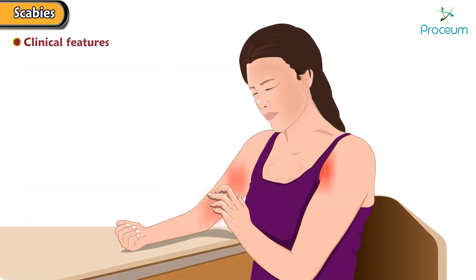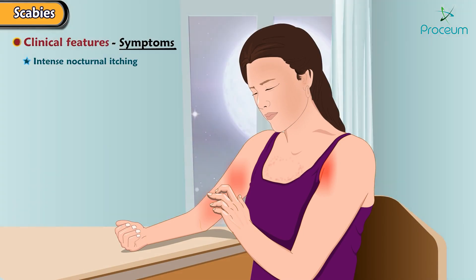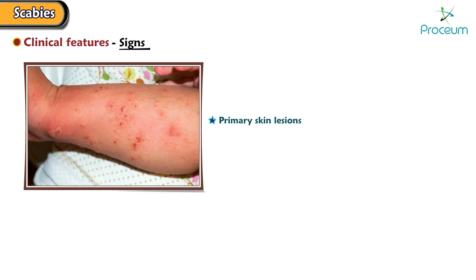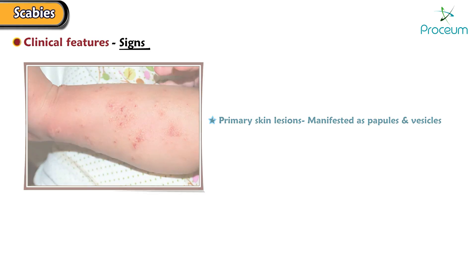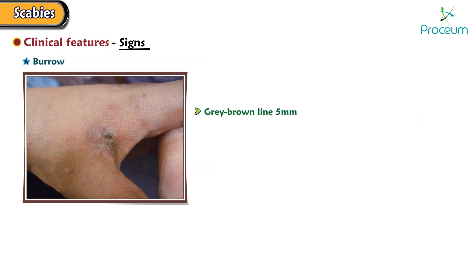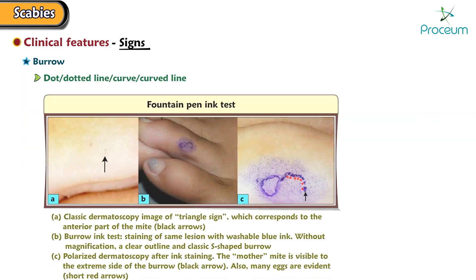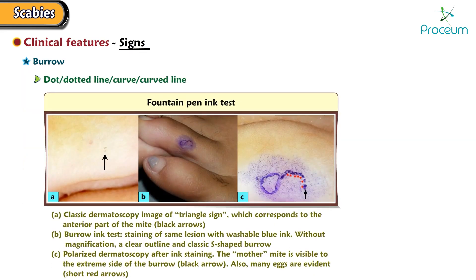Now let's talk about the clinical features. Symptoms include intense nocturnal itching and the presence of similar complaints in the family. Primary skin lesions are manifested as papules and vesicles. The burrow is a gray-brown line 5 mm in length, seen on fingerweb spaces and genitalia, with the mite as a black dot at the end. It is a special pathognomonic lesion of scabies. The burrow can be a dot, dotted line, curve, or curved line.